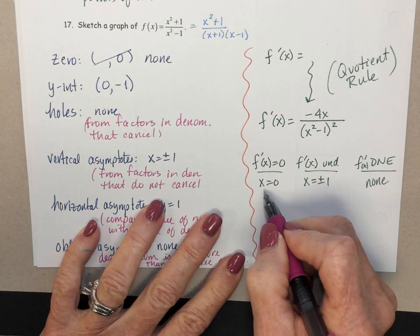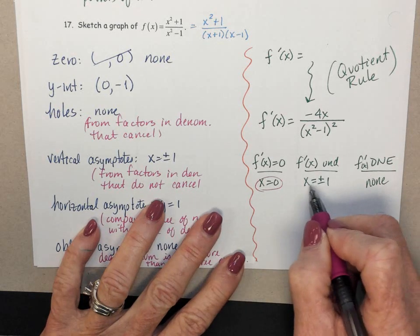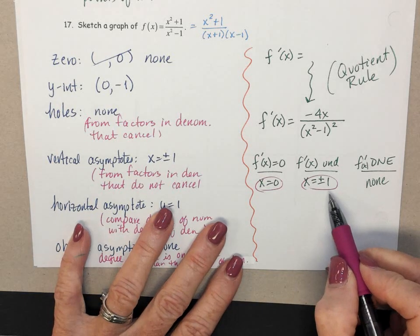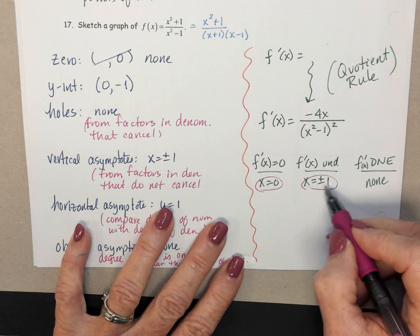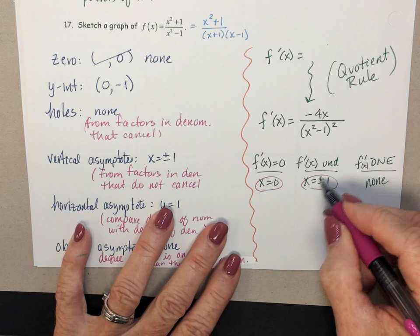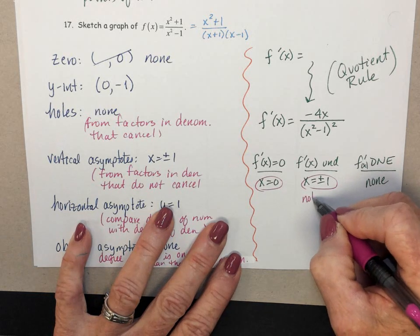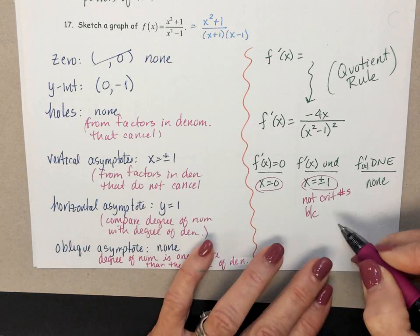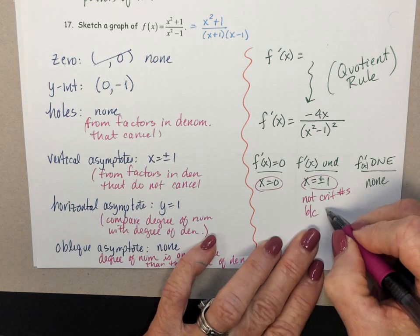Alright, looks like we have three critical numbers here. x equals 0, x equals plus or minus 1. However, this plus or minus 1, these guys are not critical numbers. Because they are not in the domain of f of x.